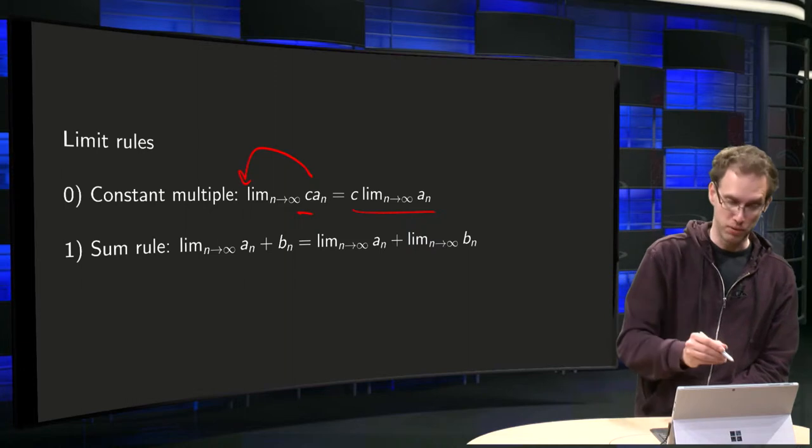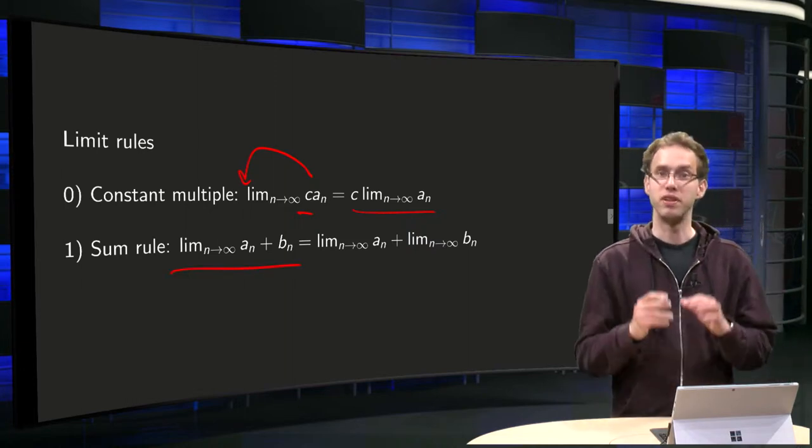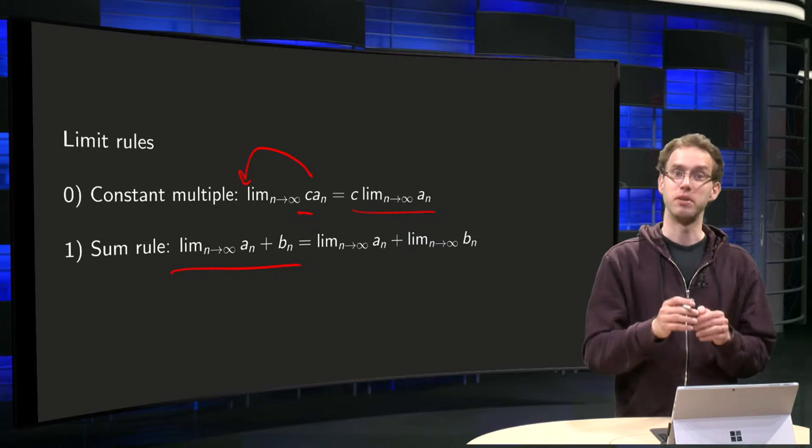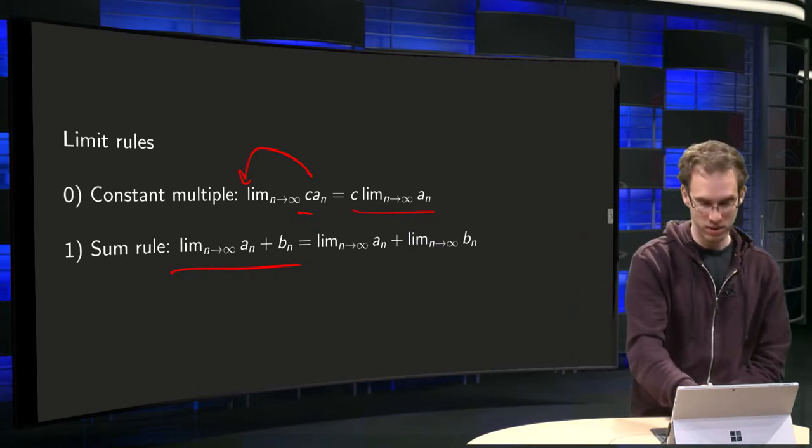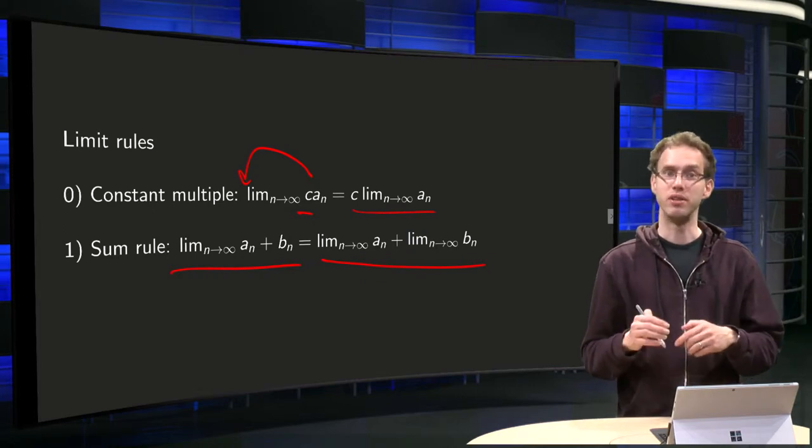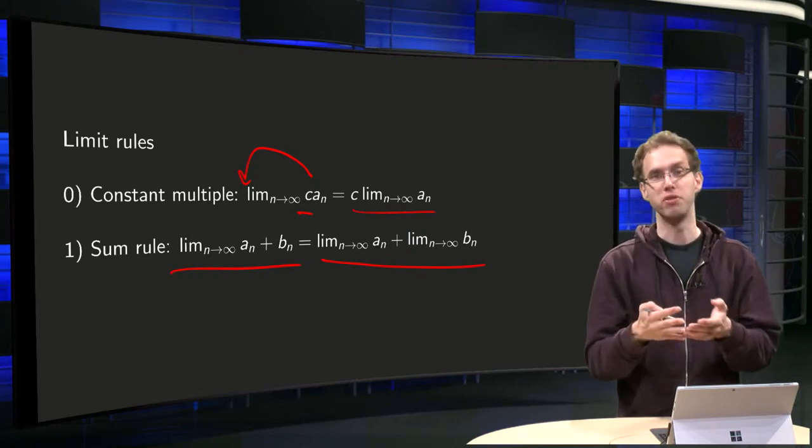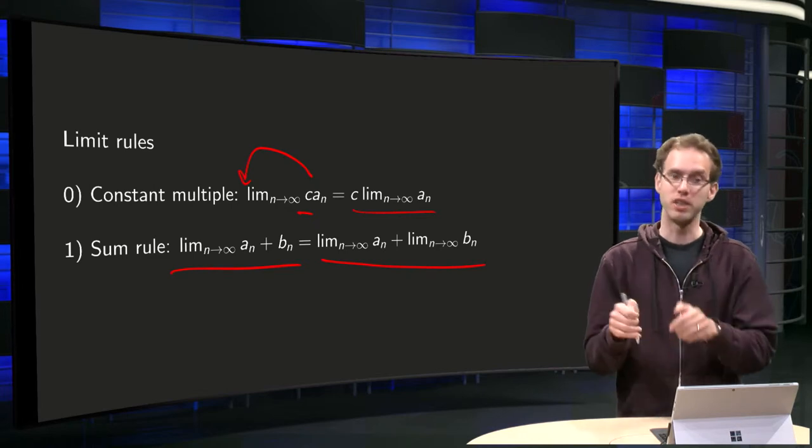Then, same as for functions, we have the sum rule. Limit n to infinity of an plus bn equals limit n to infinity of an plus limit n to infinity of bn, if all limits exist. So you can compute either sum first and then limit, or limits first and then sum.